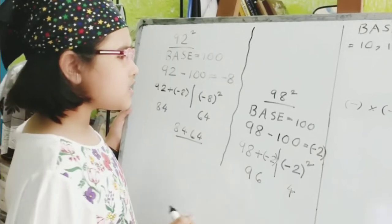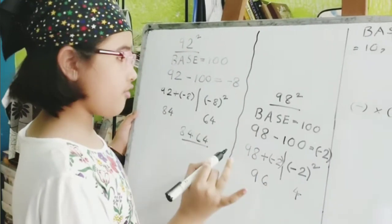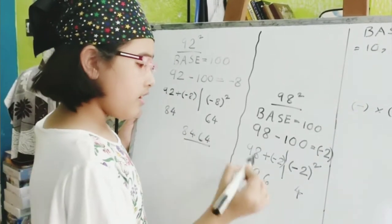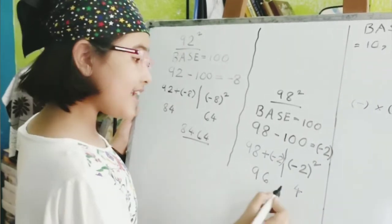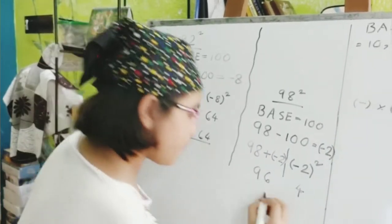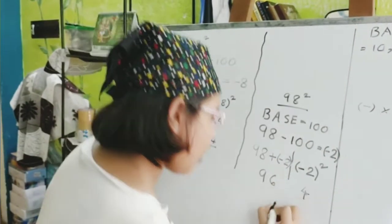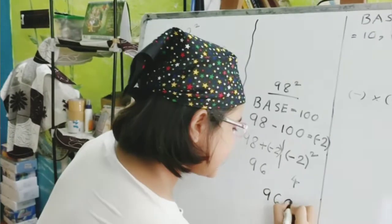But, our base number has two zeros. And, our number does not have two digits at the right side. So, we have to add a zero with this number in the text column. And, we'll get our answer as 9604.